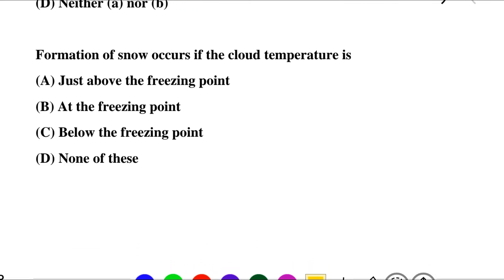Next question: formation of snow occurs if the cloud temperature is — option A: just above the freezing point, option B: at the freezing point, option C: below the freezing point, option D: none of the above. The correct answer is option C: below the freezing point.